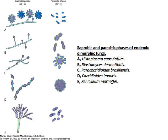As I was trying to tell you, you can see over here these are saprophytic phases that can exist at room temperature, maybe 25°C. You can see Histoplasma on the top, Blastomyces, and Paracoccidioides, and others. You can see the form that they exist in nature.